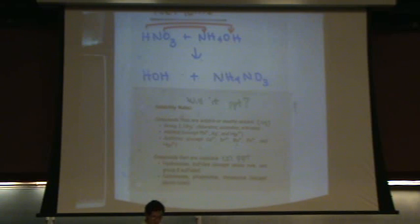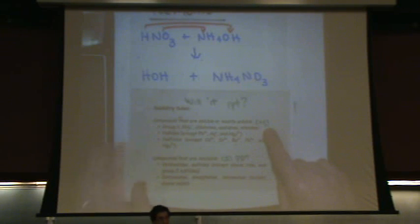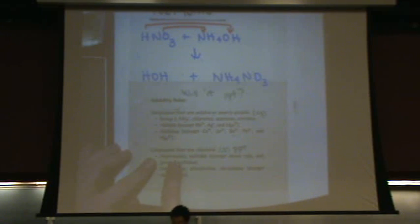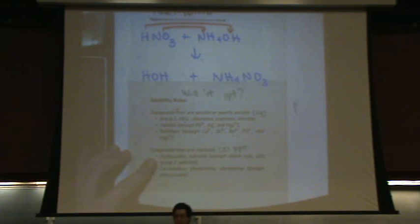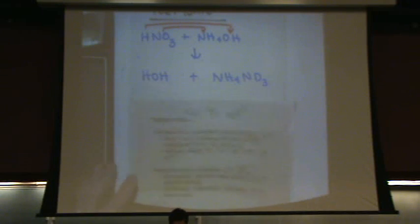Ammonium nitrate — is that soluble or insoluble? Soluble. Nitrates are here on the first bullet; they're soluble, which means they're aqueous. How about ammonium hydroxide? Also soluble — see the NH4. You might notice the fourth bullet says hydroxides are insoluble, but remember these bullets are in order of importance, so the first one trumps and it is soluble.